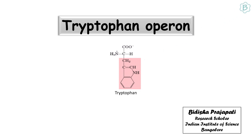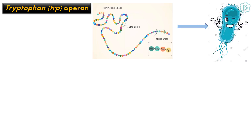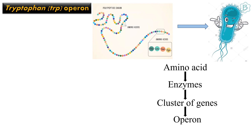This is Fetisha and today I am going to talk about the tryptophan operon. We know that protein synthesis requires a lot of amino acids and there are 20 amino acids available. E. coli has all of the enzymes for making all amino acids. These enzymes for synthesis of amino acids are clustered in genes present in an operon.